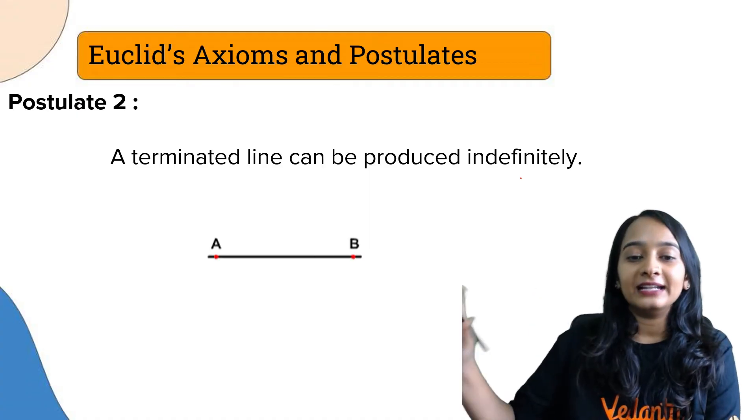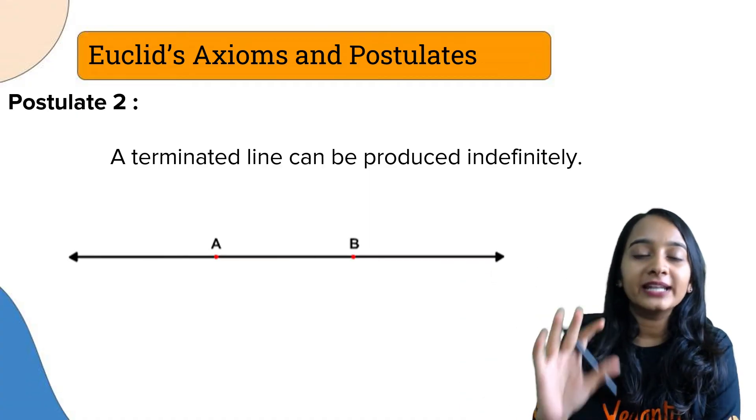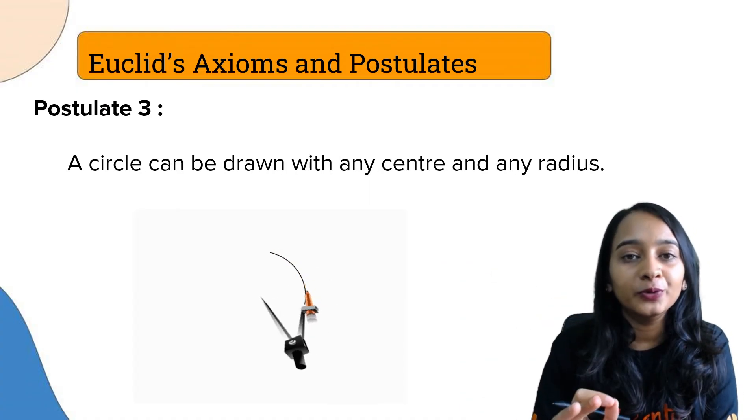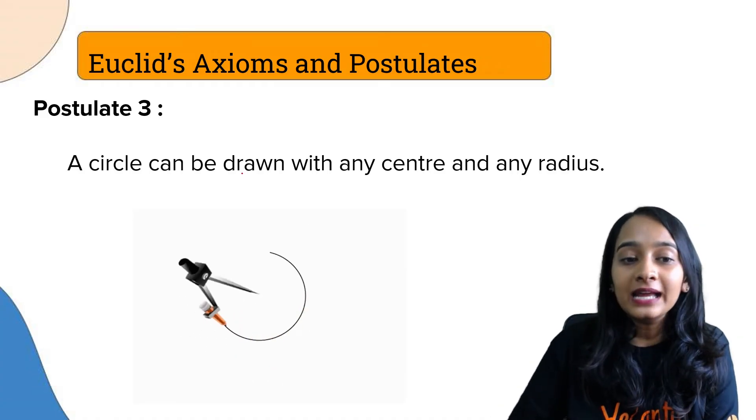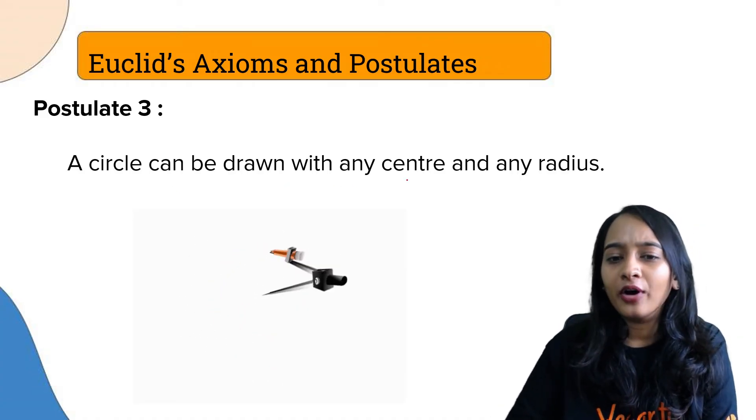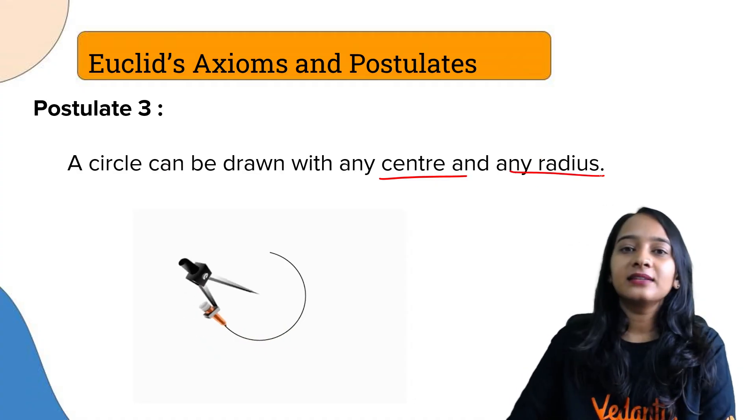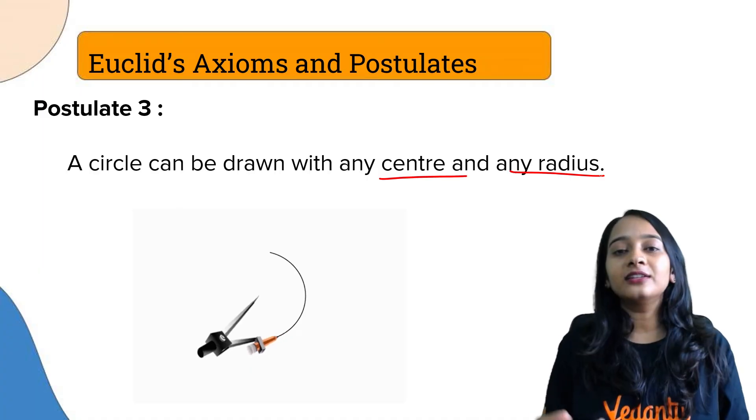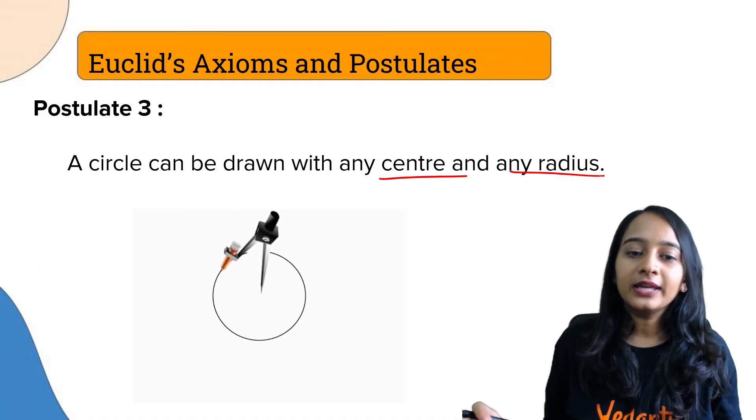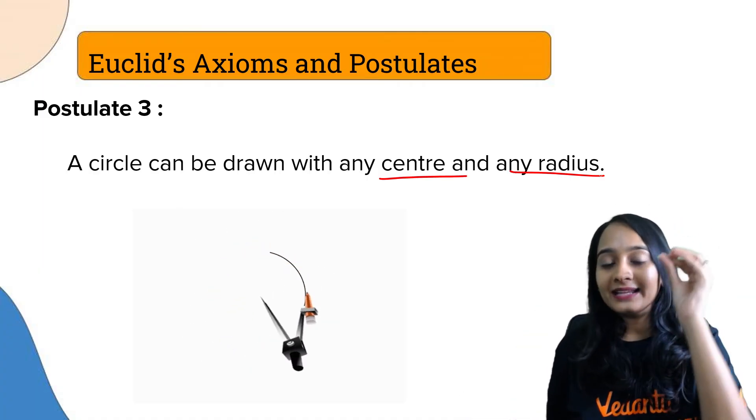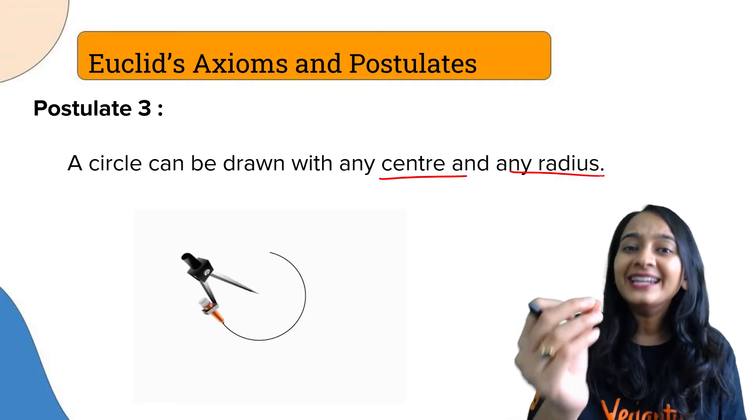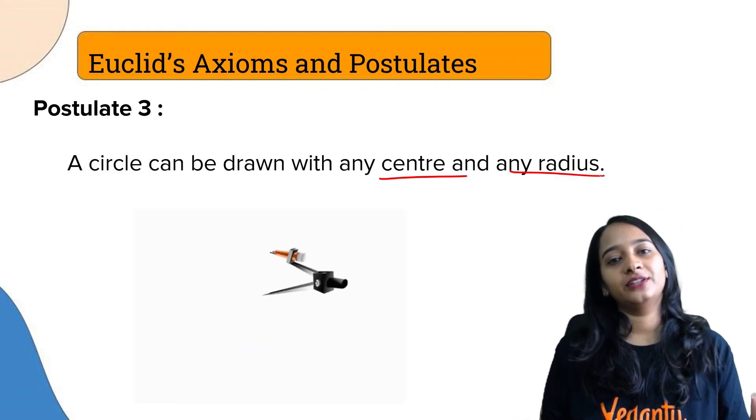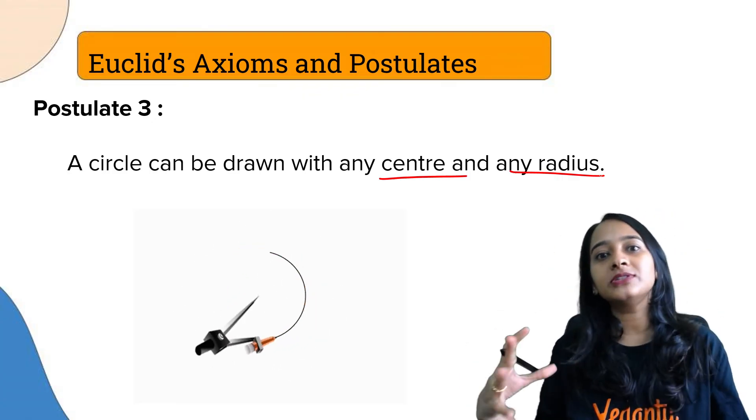Postulate number 3: a circle can be drawn with any center and any radius. Any circle can be drawn with any center, any radius. This center is here, this center is here, with different radius conditions. You can draw a circle anywhere.